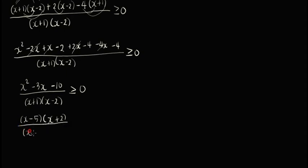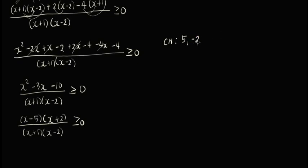So we have x minus 5 times x plus 2 over x plus 1 times x minus 2, is greater than or equal to 0. Now let's determine the critical numbers — those numbers that will make your numerator or denominator equal to 0. For the numerator: the first factor gives us 5, the second gives us negative 2. For the denominator: negative 1 can never be included because it will make the denominator 0, and similarly positive 2 is also a critical number.